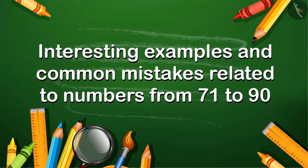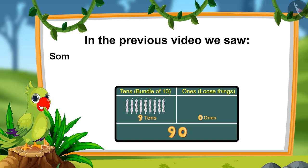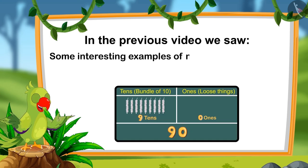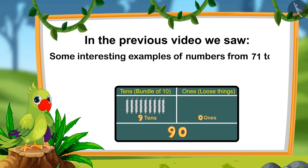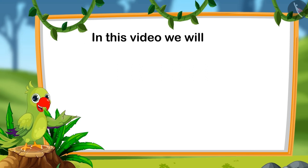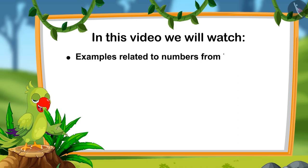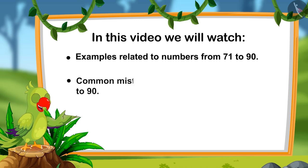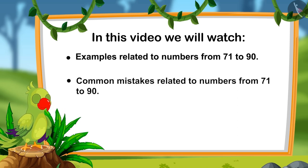Interesting Examples and Common Mistakes Related to Numbers from 71 to 90. Hello children, in the last video we saw some interesting examples of numbers from 71 to 90. In this video, we will watch some more interesting examples related to those numbers. Additionally, we will learn about some common mistakes that we should avoid.